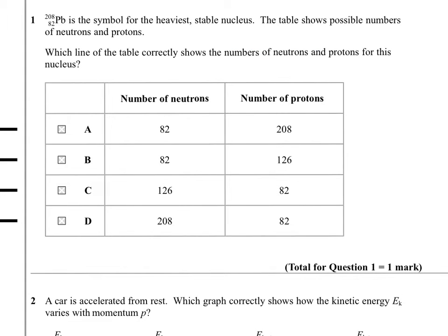Question 1. Lead, 208, 82, is the symbol for the heaviest stable nucleus. The table shows possible numbers of neutrons and protons. Which line of the table correctly shows the numbers of neutrons and protons for this nucleus?